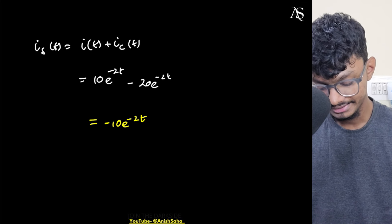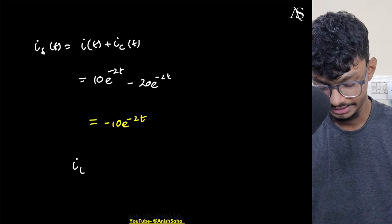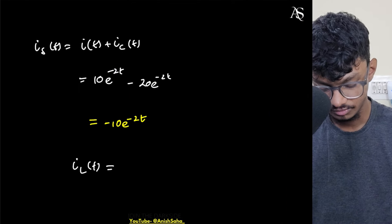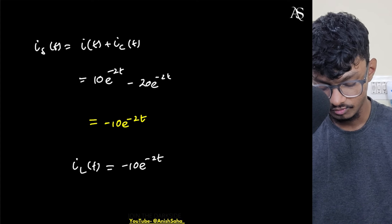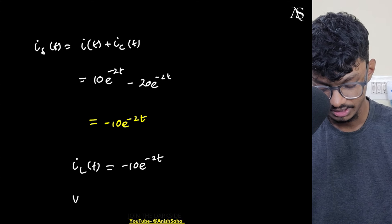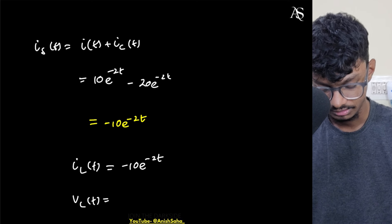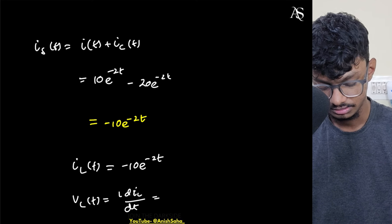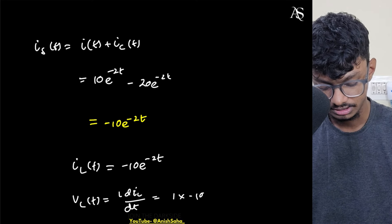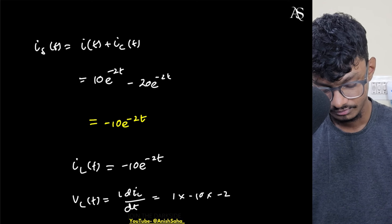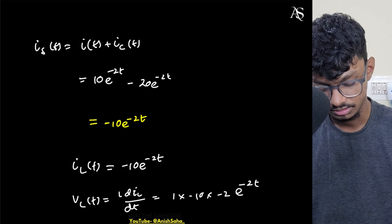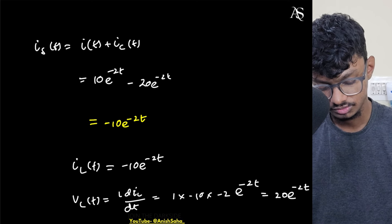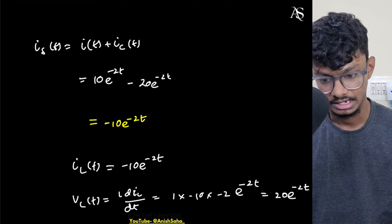Since Is(t) equals the source current, it also equals IL(t). So IL(t) = -10e^(-2t). Now VL(t) = L · dIL/dt. With L = 1, differentiating gives VL(t) = 1 × (-10) × (-2) · e^(-2t) = 20e^(-2t).